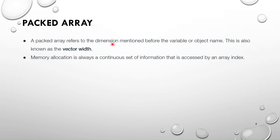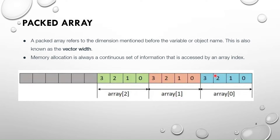A packed array refers to the dimension mentioned before the variable or object name — this is also known as the vector width. We call it packed because it is a set of contiguous bits; memory allocation is always a continuous set of information accessed by an index. As you can see in the picture, array[0], array[1], array[2] are stored in a contiguous manner — that is a packed array.